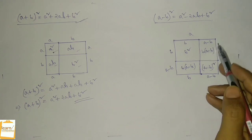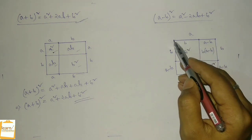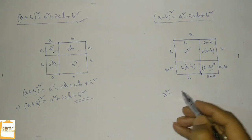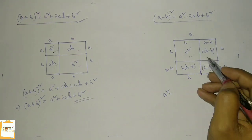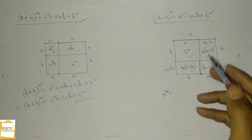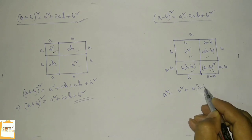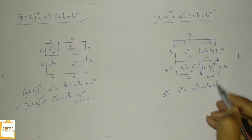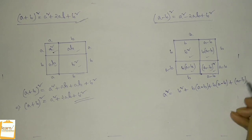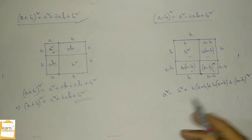Now the area of this big square is a squared, because the length of each side is a. So a squared equals the sum of the areas of all four parts: b squared plus b times a minus b plus b times a minus b plus a minus b whole square.